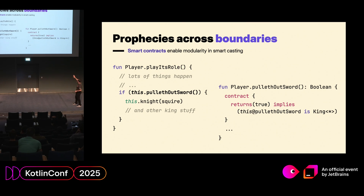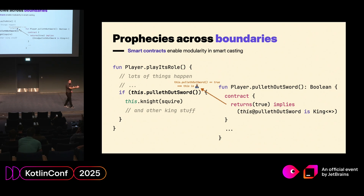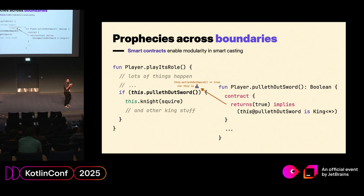We can have the implementation of 'pullOutSword' — we don't care about that. What we care is the contract, and this contract says: if this function returns true, then it implies that the receiver is a king. Once it has this information, it can put it back, and this is exactly the same implication we had before — that if this whole thing is true, then this is a king. Smart contracts are really important once you want to move smart casting from the local environment to a broader scope.